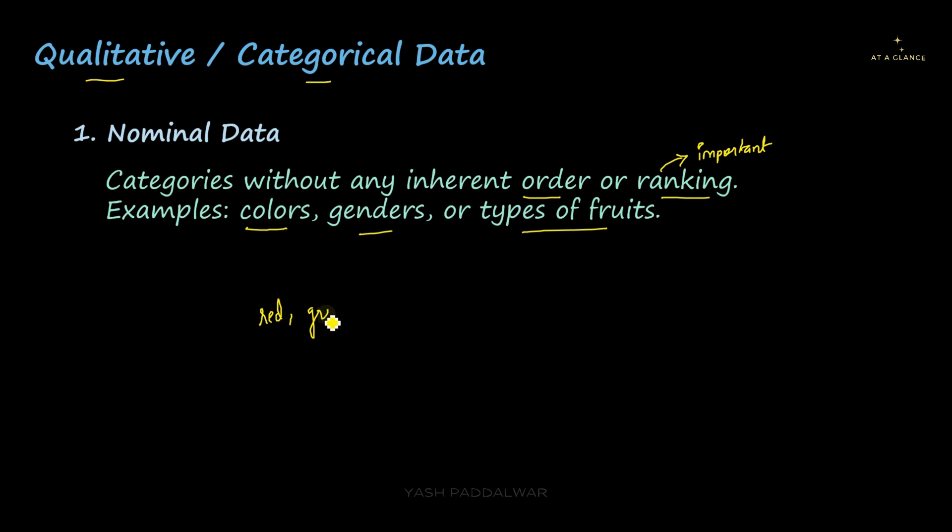You can see there are several types of colors: red, green, blue, yellow, and so on. But all these colors have the same importance. They are just different colors with different names, but there is no special importance given to any particular color. No color is inferior or superior to the other. That is why it is called nominal data. Similarly, in gender and different types of fruits, the same thing follows.